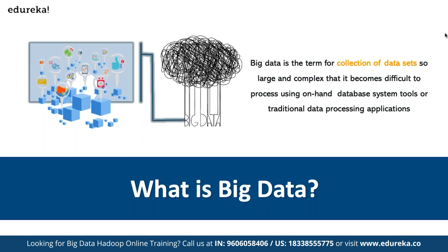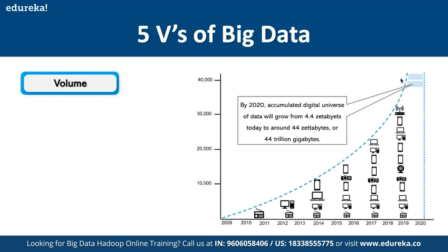Big data helps us in analyzing these kinds of unstructured data sets. There are five V's of big data. The first is Volume. By 2020, the accumulated digital universe of data was projected to grow from 4.4 zettabytes to around 44 zettabytes, or 44 trillion gigabytes. By the next four years, it is expected to grow to 100 zettabytes per month.